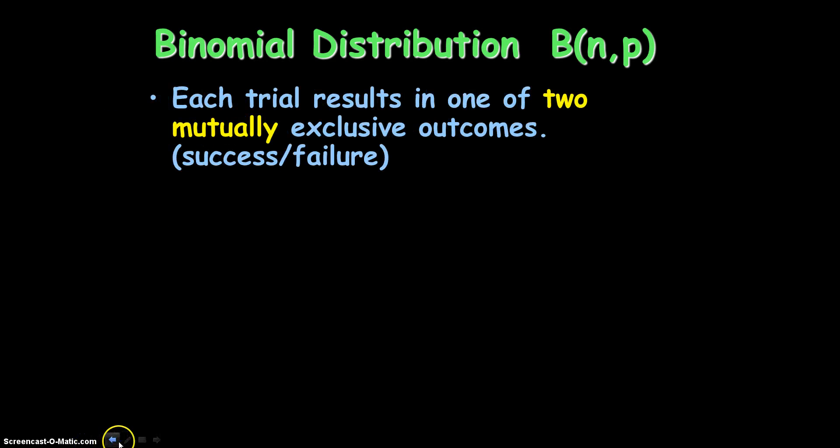Binomial distribution. I should note that this notation right here might show up on the AP exam, but more than likely it won't. Let's talk about binomial distribution. Each trial results in one of two mutually exclusive outcomes. And what this means is that you can't have part of one come out of the other. It's very concrete. It's either success or failure. It's either right or wrong. Your outcome for every trial can only be one thing. There's no gray area here.